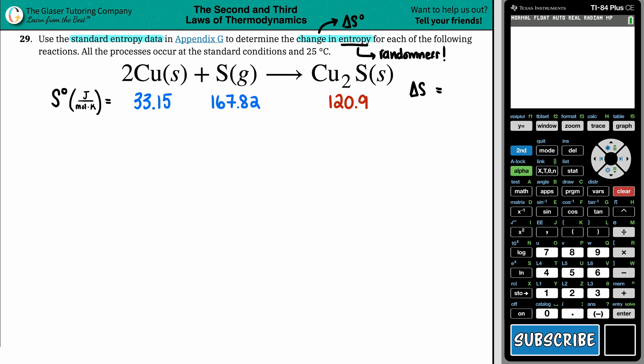is only for standard conditions, which means that we have to use the values in the back of a textbook. And that's what this question prompted us. It said, use the standard entropy data in that appendix. Appendix G, in this case, it could be a different appendix in your textbook. So we are solving for delta S°.